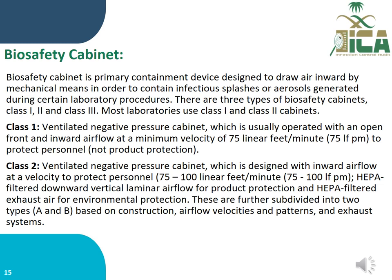Class 2 is a ventilated negative-pressure cabinet designed with inward airflow at a velocity of 75 to 100 linear feet per minute to protect personnel, with HEPA-filtered downward vertical laminar airflow for product protection, and HEPA-filtered exhaust air for environmental protection. Class 2 cabinets are further subdivided into two types, A and B, based on construction, airflow velocities and pattern, and exhaust system.